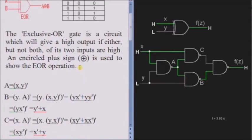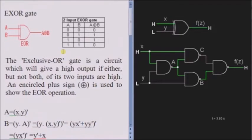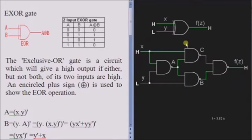An XOR gate can be built with the help of NAND gates. This is the XOR gate using NAND gates, and this is the logical symbol for the XOR gate. Since the NAND gate is a universal gate, any gate such as AND, OR, NOT, XOR, and XNOR can be built using NAND gates.